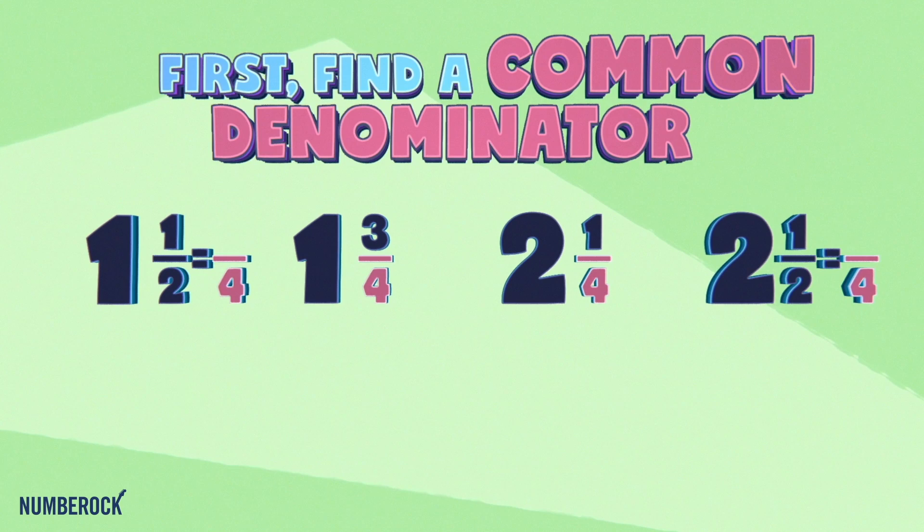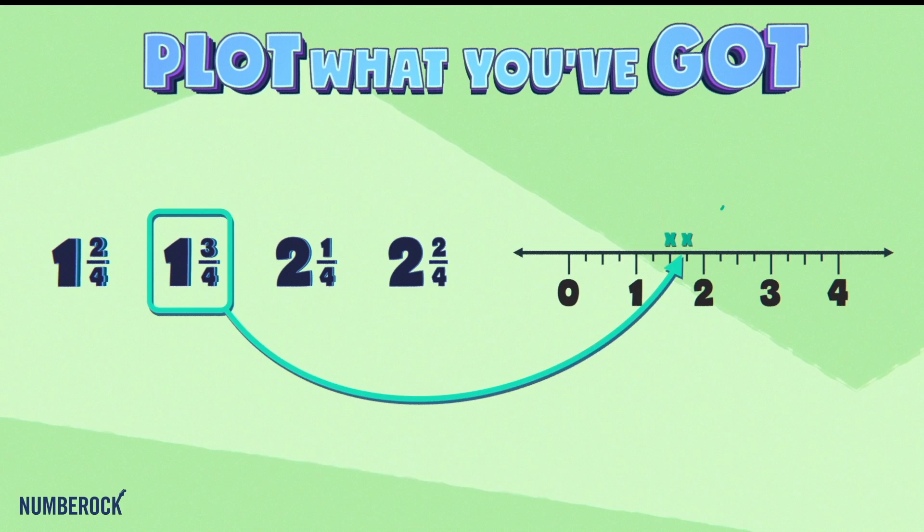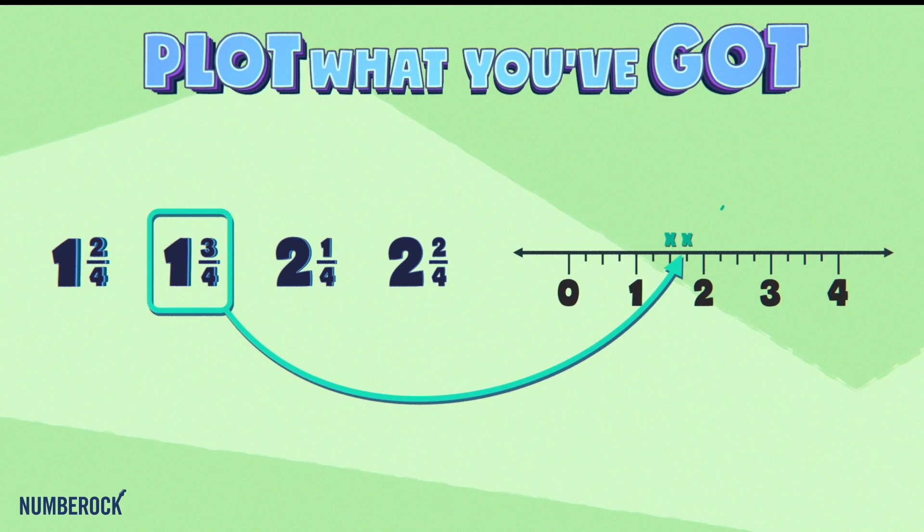First, find a common denominator. Make equivalent fractions for all the data. You can block what you got on the nine clock, with a label and the title at the top.